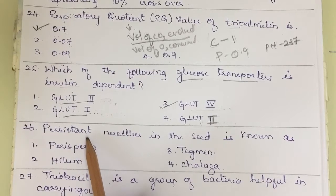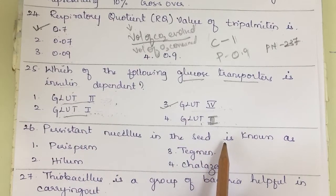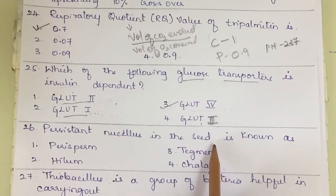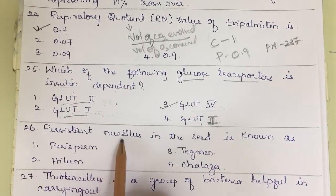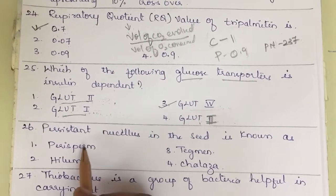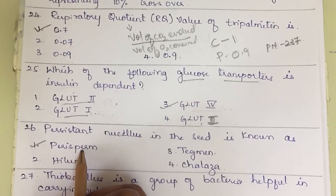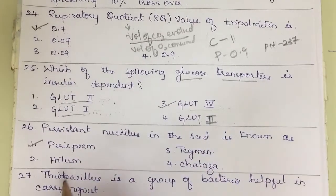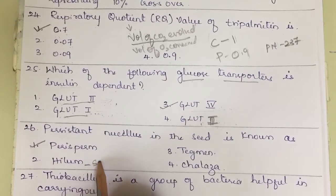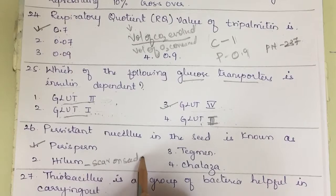Question 26: Persistent nucellus in the seed is known as perispome. This is a very direct question. The answer is perispome.